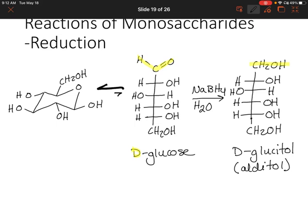D-glucitol is actually found in fruits and berries, and it's actually referred to as sorbitol. So if you've heard of sorbitol before, this is the structure.